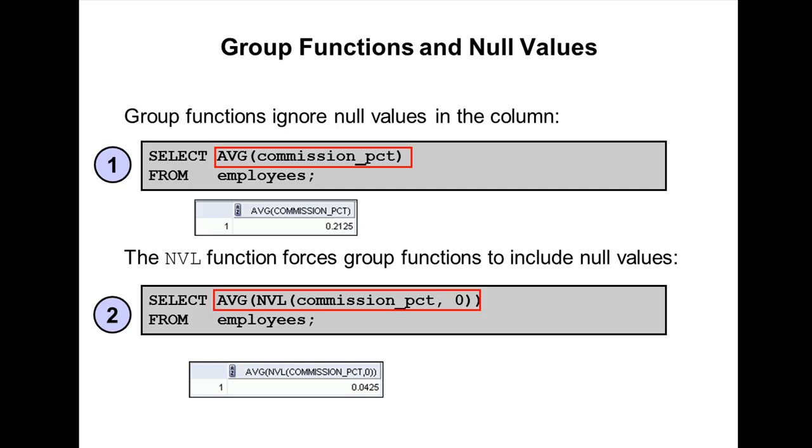We have to use NVL function. The NVL function forces the group function to include null values. When you use NVL function along with AVG, then average is calculated based on all rows in the table, regardless of whether null values are stored in the commission_pct column. The average is calculated as total commission paid to all employees divided by the total number of employees in the company.